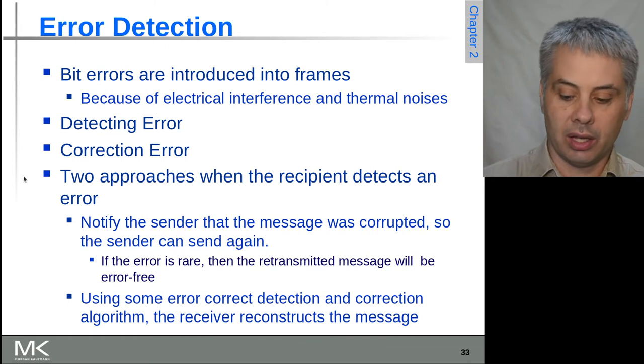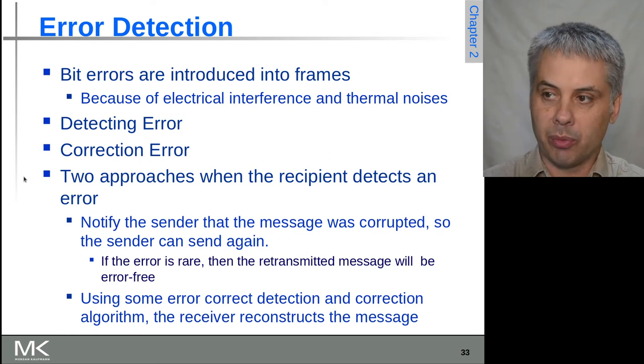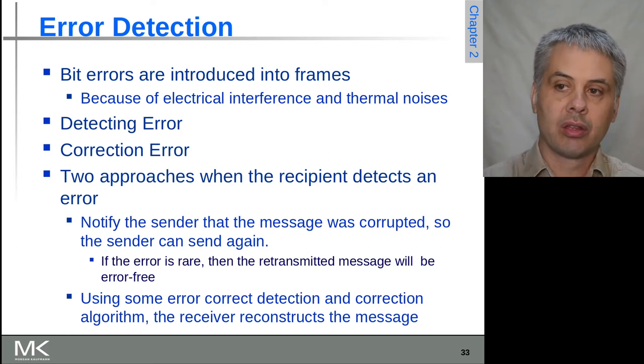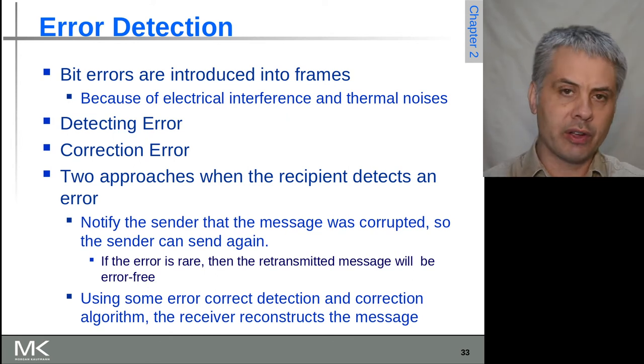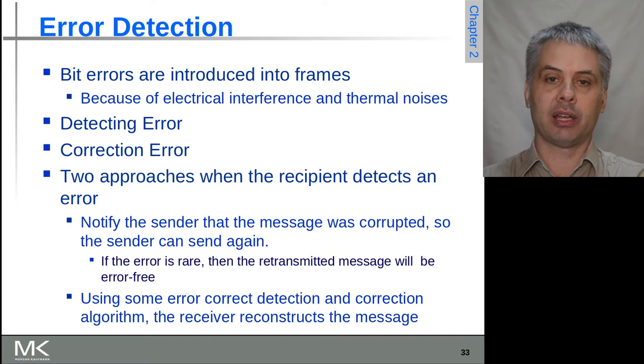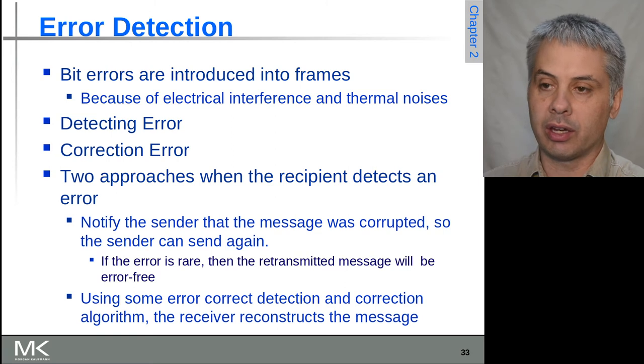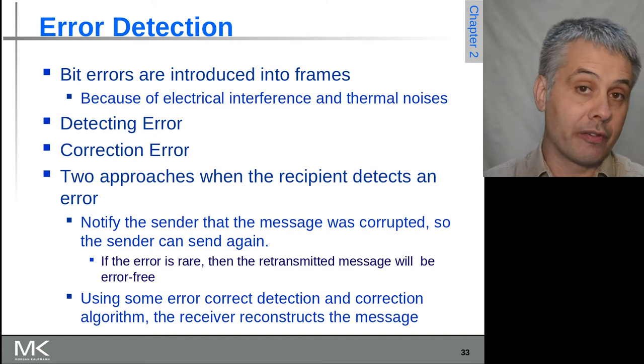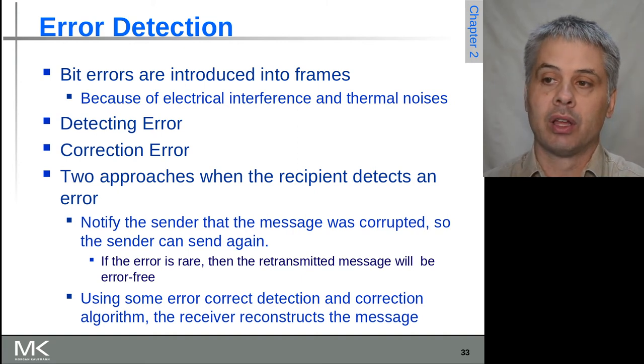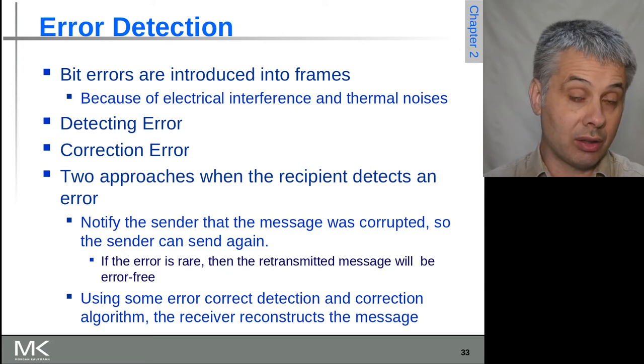Let's have a look at error detection more generally. Errors can occur for a wide variety of reasons—it could be electrical interference, thermal noise, the cable was briefly unplugged and plugged back in, someone trod on it and caused transient issues, radio interference, solar activity at certain radio frequencies causes significant interference.